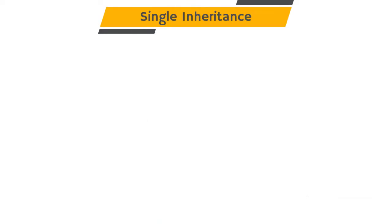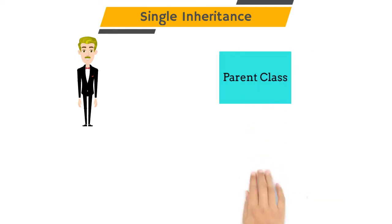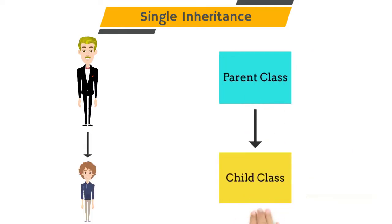The first type is single inheritance. This is the simplest form of inheritance. Here we have one parent class and one child class. Properties of the parent class can be used by the child class.